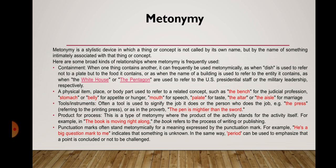The next stylistic device is metonymy. Metonymy is a stylistic device in which a thing or concept is not called by its own name but by the name of something intimately associated with that thing or concept. Here are some broad kinds of relationships where metonymy is frequently used. Containment: when one thing contains another, it can frequently be used metonymically — as when 'dish' is used to refer not to a plate but to the food it contains, or when the name of a building is used to refer to the entity it contains, as when 'the White House' or 'the Pentagon' refer to the US presidential staff or the military leadership respectively.